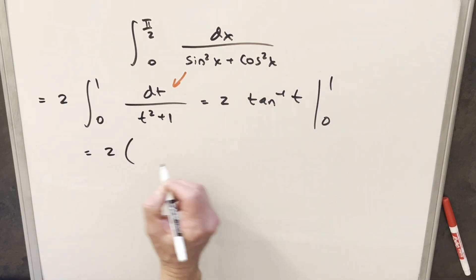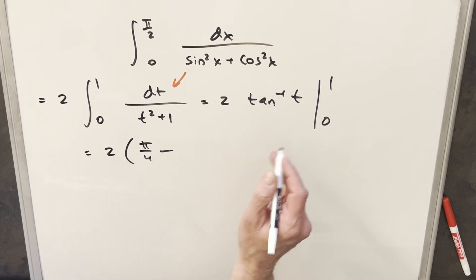Plugging this in, we'll have our 2 out front. Arctan at 1 is going to be just π over 4 minus arctan at 0, that's just going to be 0. Multiplying 2 times π over 4, we just get our final solution of π over 2.